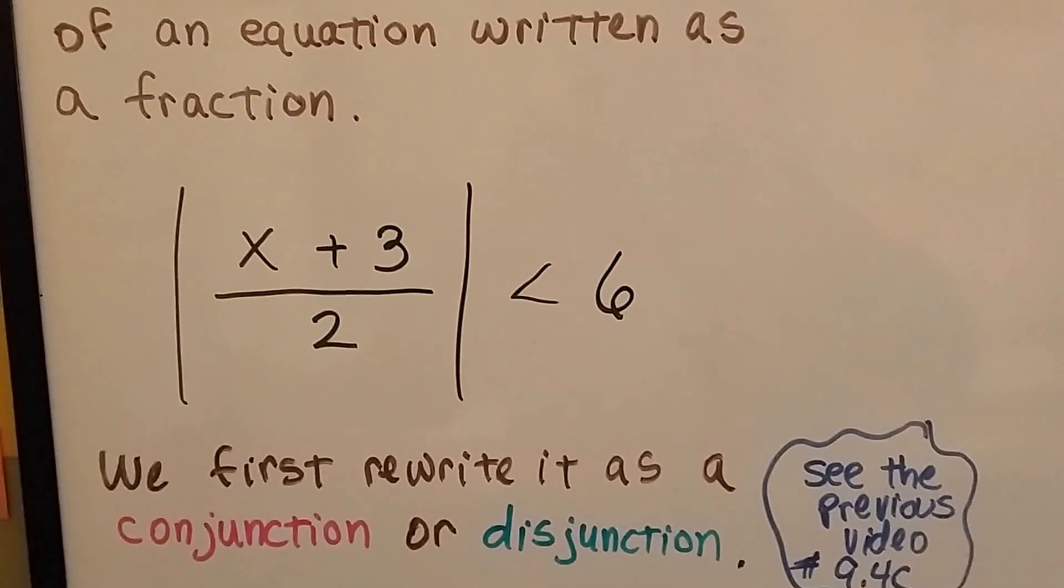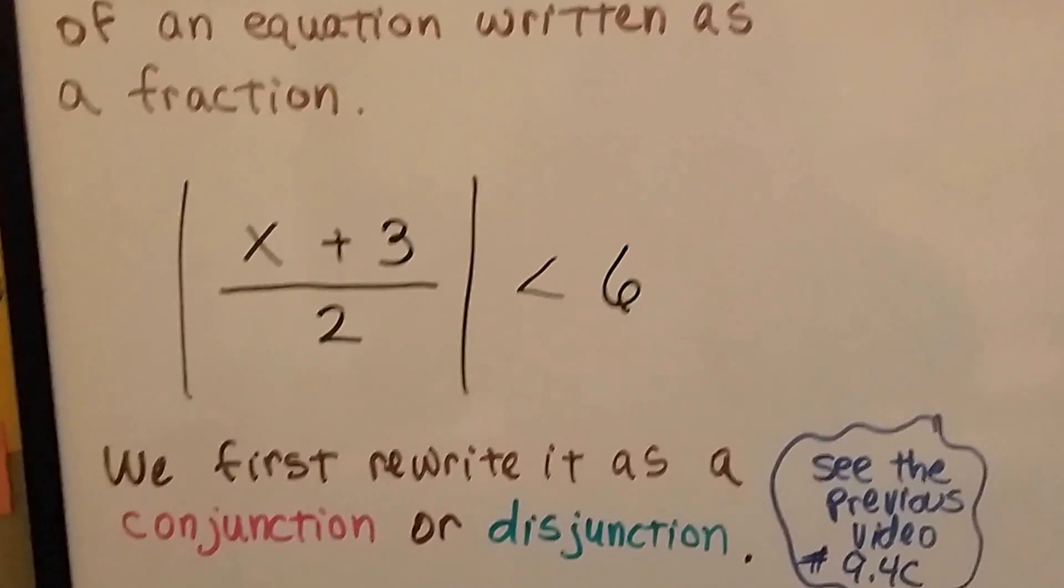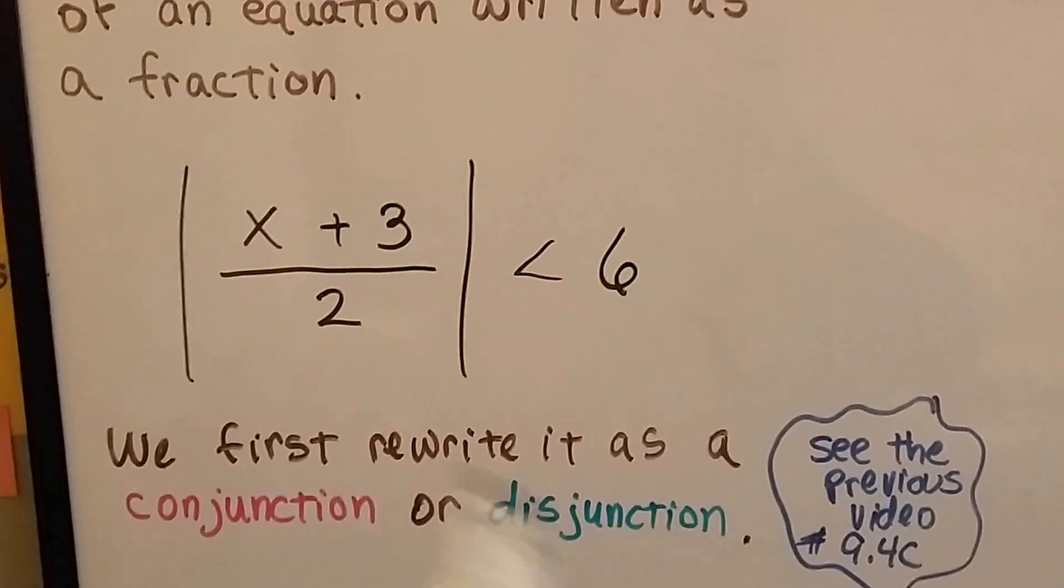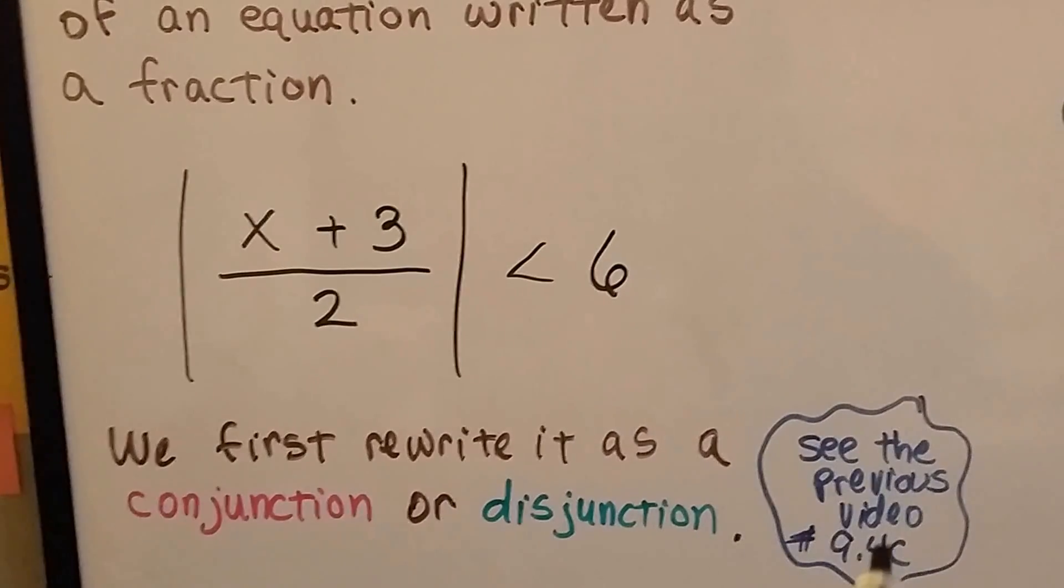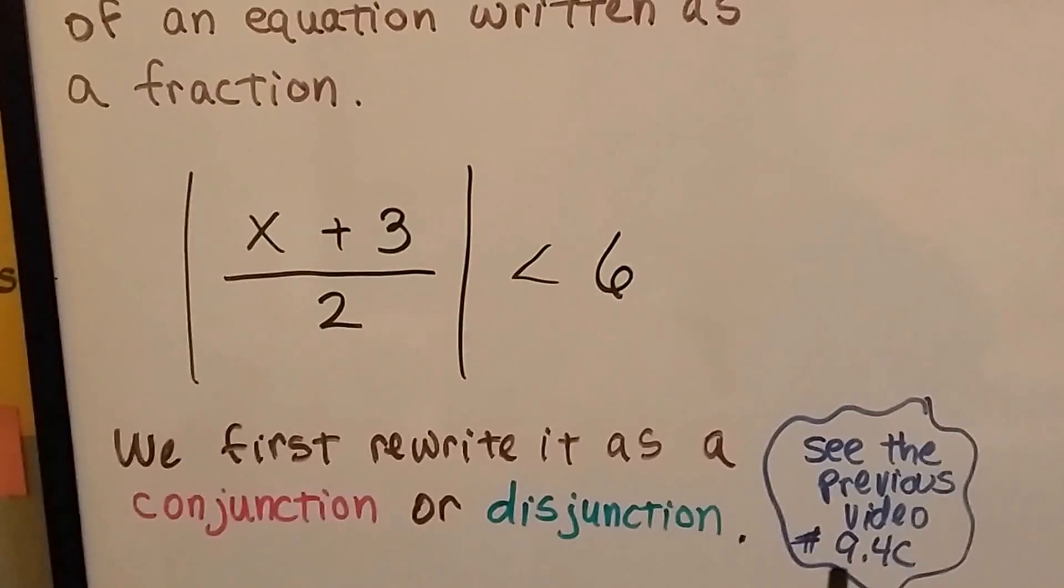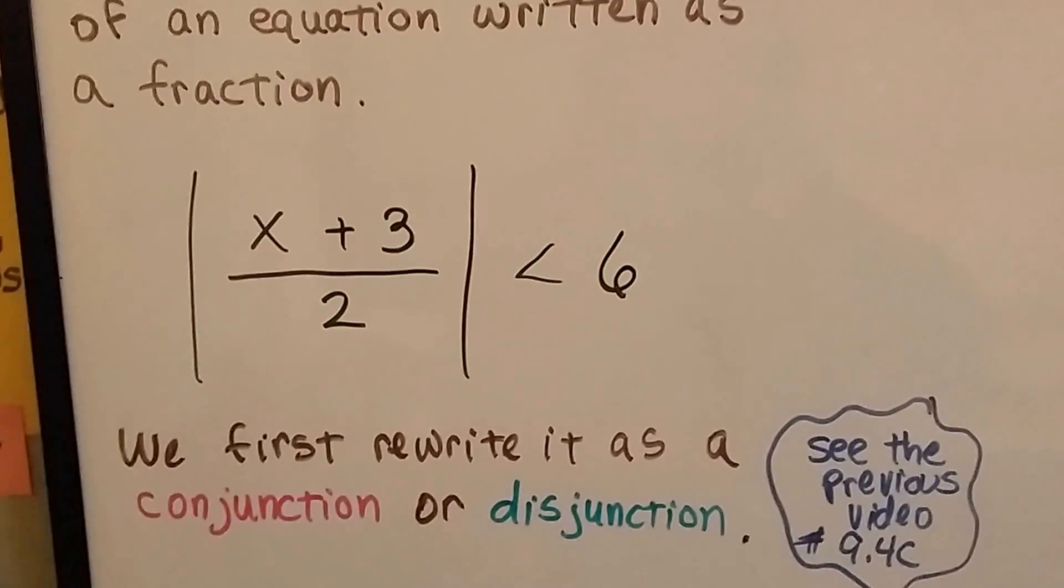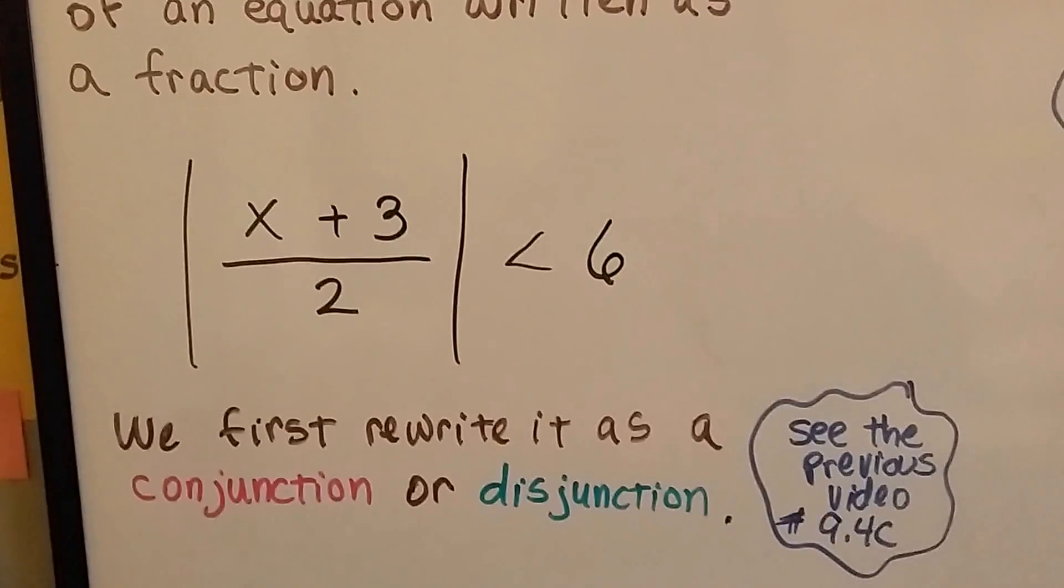We first rewrite it as a conjunction or disjunction. Now, if you don't know the difference between these, you need to see 9.4a, b, but definitely 9.4c, because I explain how to quickly identify the difference between a conjunction or a disjunction.